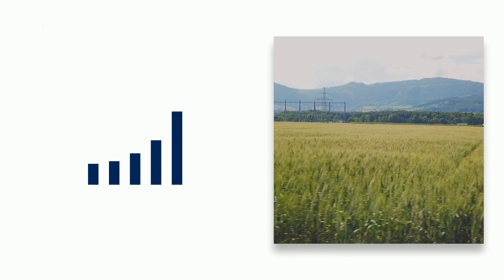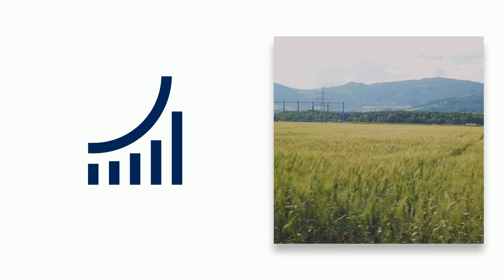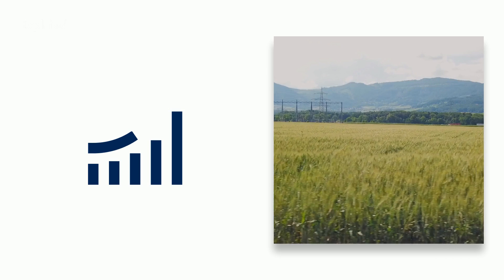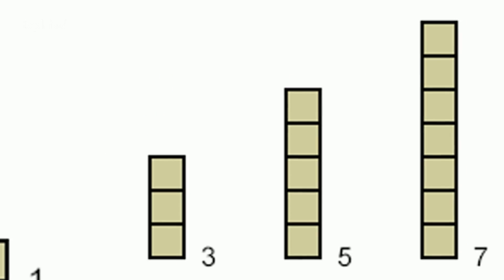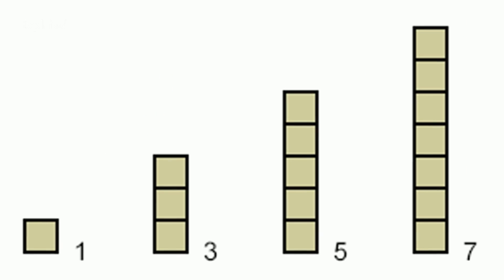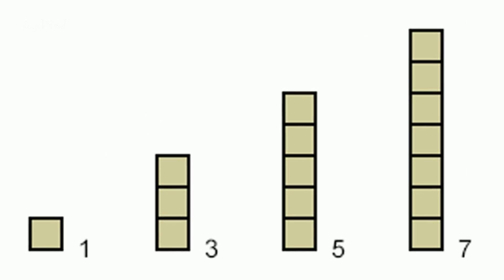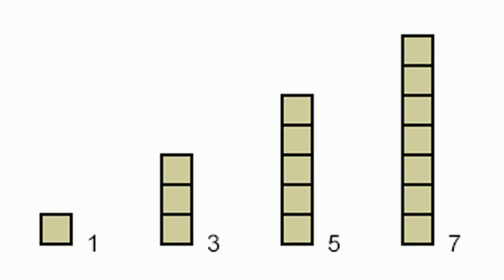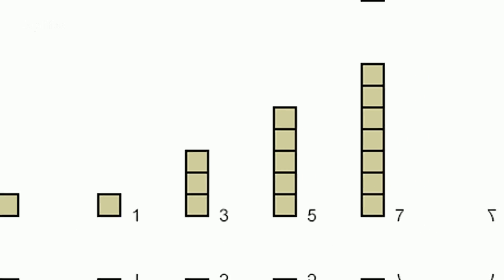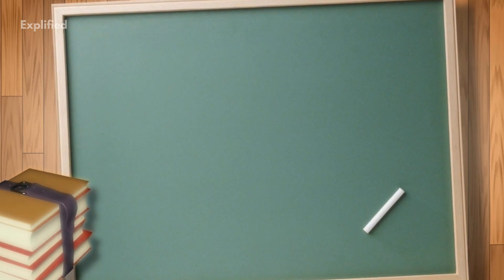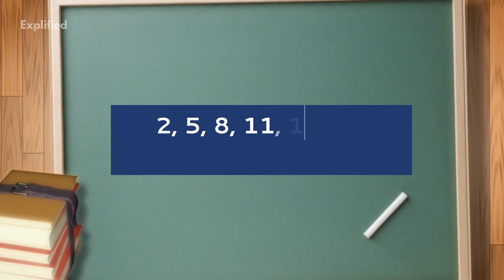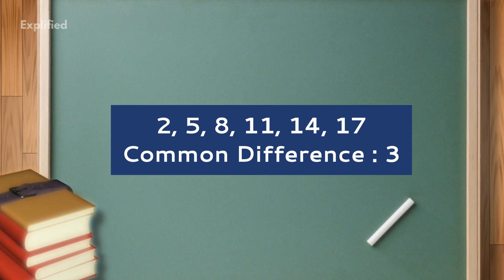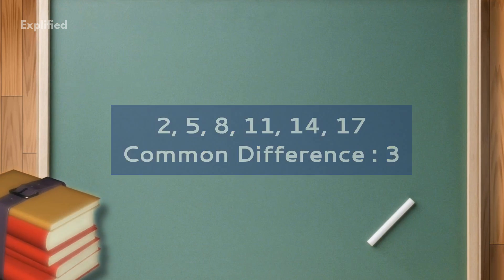Additionally, he stated that food production increases in arithmetic progression. An arithmetic progression is a sequence of numbers such that the difference between the consecutive terms is constant. For example, in the series 2, 5, 8, 11, 14, 17, the common difference is 3.